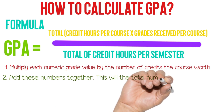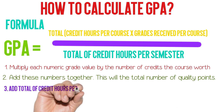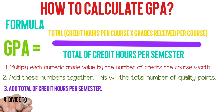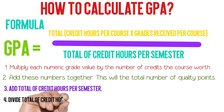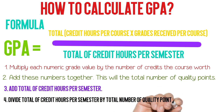First, multiply each numeric grade value by the number of credits the course is worth. Second, add these numbers together — this is the total number of quality points. Third, add up the total credit hours per semester. Fourth, divide the total number of quality points by the total credit hours per semester.